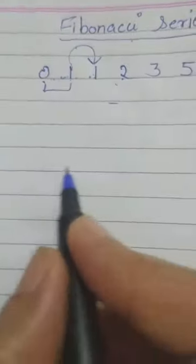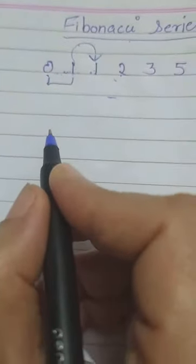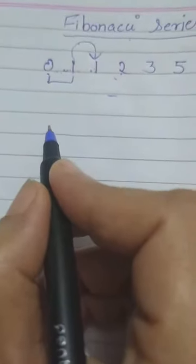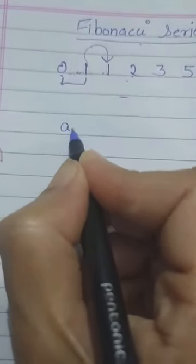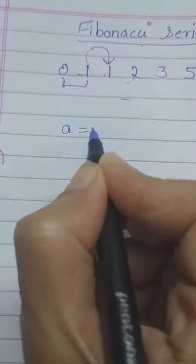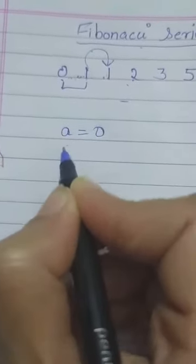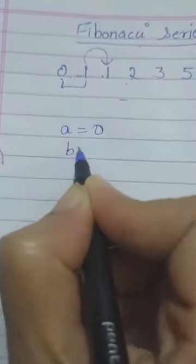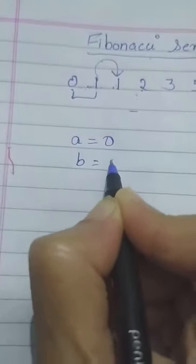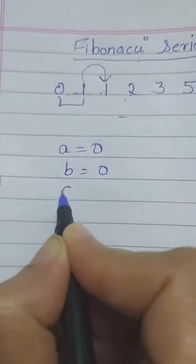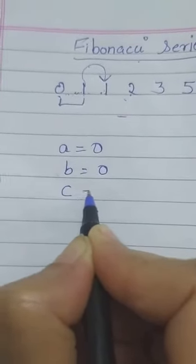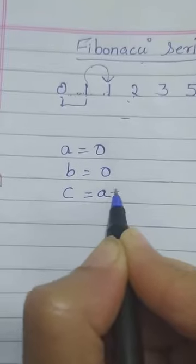Now we have to make the program. For making a program, first we take two values. The first two digits — suppose we have taken A equals to 0 and B equals to 0. In the third value we put C equals to A plus B.